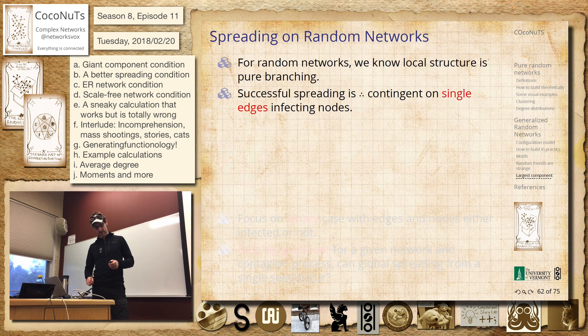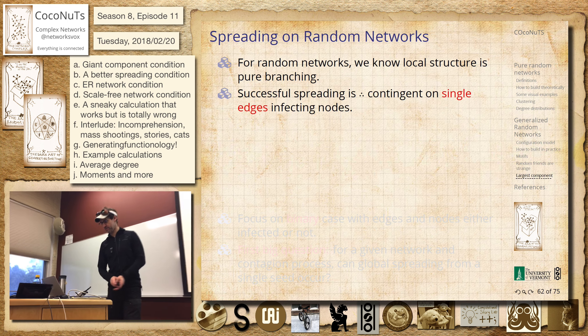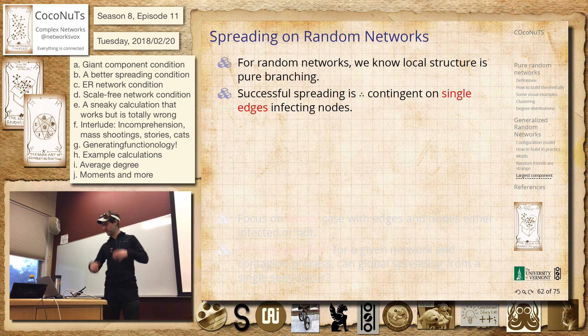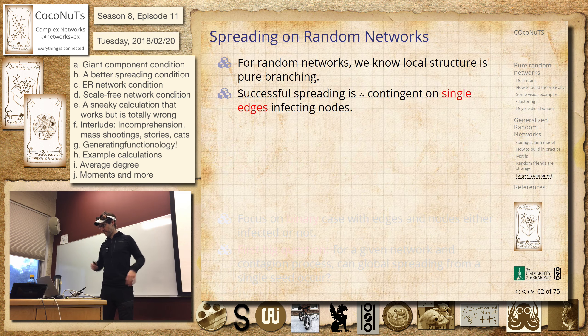So, a couple of things. We know we have this local branching structure — that was a sort of observation. There's no clustering, and we're thinking about infinite random networks.